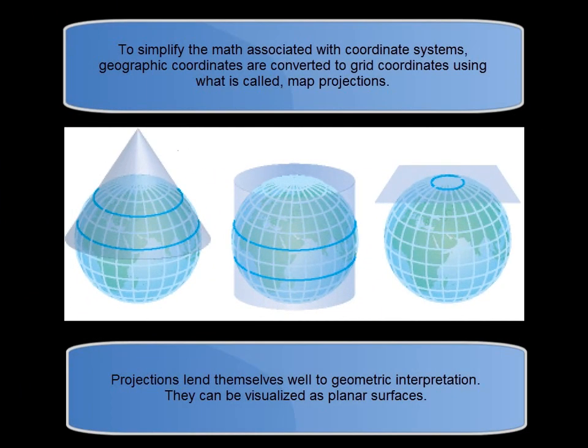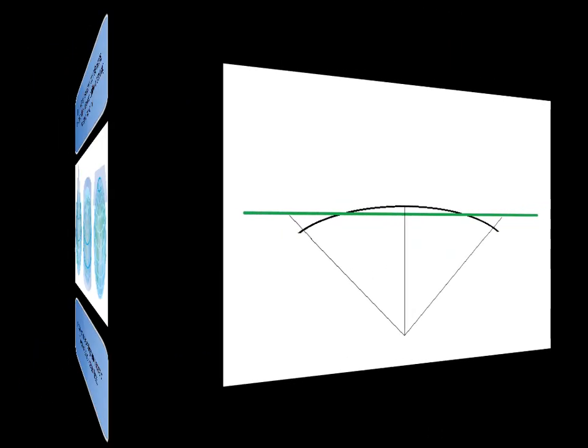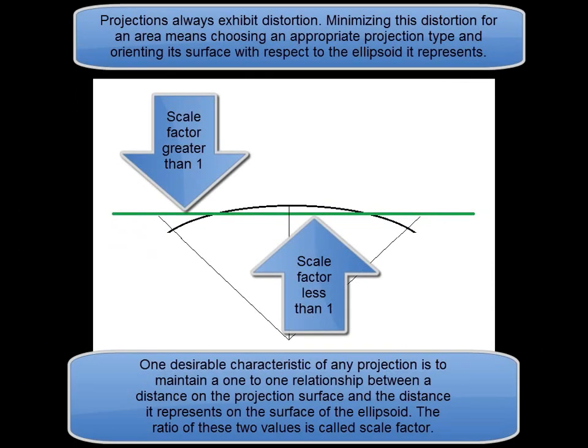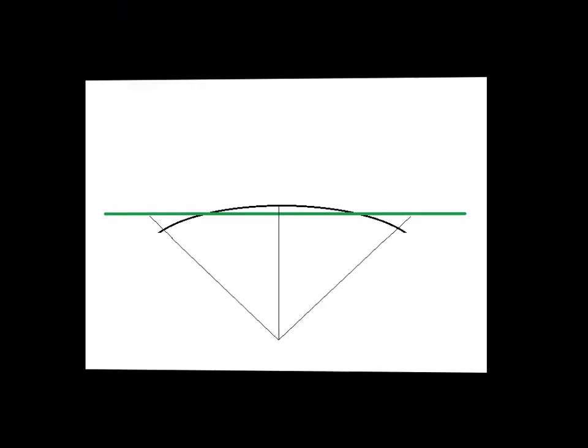Projections lend themselves well to geometric interpretation and they can be visualized as planar surfaces. Projections always exhibit distortion. Minimizing this distortion for an area means choosing an appropriate projection type and orienting its surface with respect to the ellipsoid it represents. One desirable characteristic of any projection is to maintain a one-to-one relationship between a distance on the projection surface and the distance it represents on the surface of the ellipsoid. The ratio of these two values is called scale factor.